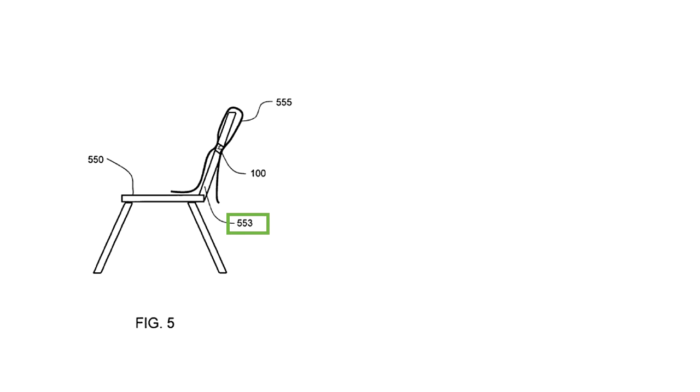Now as you'll note in a beach chair, the seat back 553 is typically reclined. A user might place a towel 555 over the seat back and then secure it with the elastic band 100.